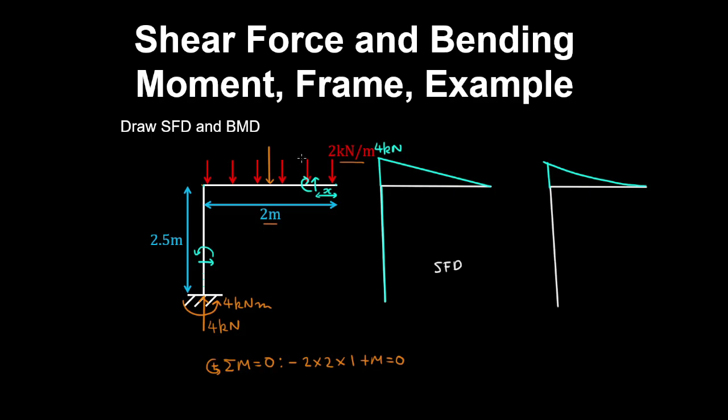It's simply going to be W by the length, and the resultant acts in the middle of that beam. So we multiply this by the moment arm, which is 2 over 2. Therefore the magnitude of the bending moment is 4 kN meters.